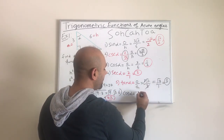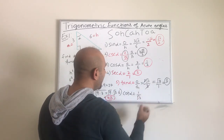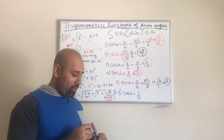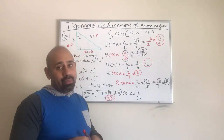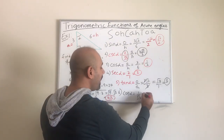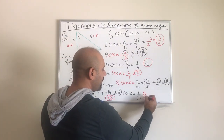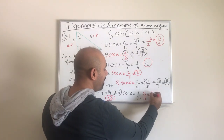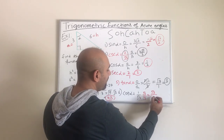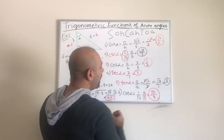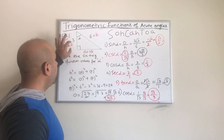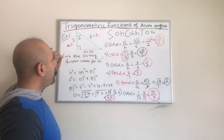The last one is the cotangent of alpha, which is the reciprocal of the tangent. If tangent is radical 3 over 1, then cotangent is 1 over radical 3. Again we have a radical in the denominator, so we rationalize by multiplying by radical 3 over radical 3, giving us radical 3 over 3.